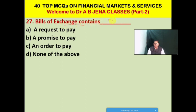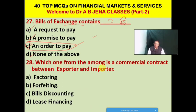Next MCQ: a bill of exchange as a negotiable instrument contains what? A: a request to pay, B: a promise to pay, C: an order to pay, D: none of the above. C is the right option — a bill of exchange contains an order to pay. Next MCQ: forfeiting is a commercial contract between the exporter and importer. B is the right option — forfeiting is applicable in the case of international trade or foreign trade, i.e., export or import trade.